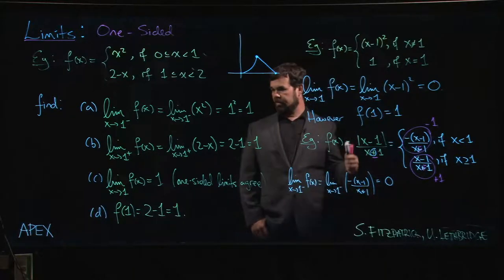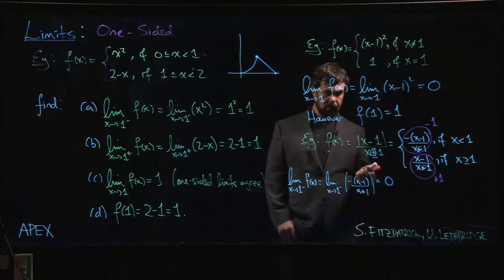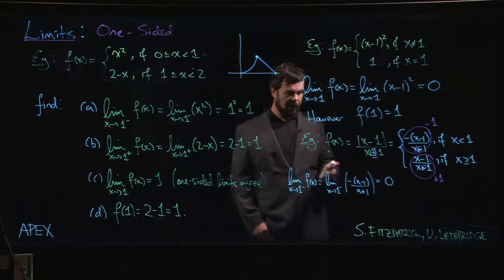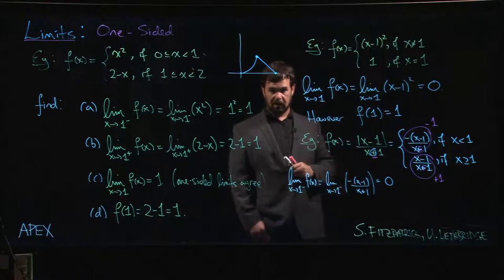So the moral of the story is that if you're handed something with absolute values in it, you sometimes need to be a little bit careful because absolute value functions are piecewise defined functions. And when in doubt, if you're dealing with a piecewise defined function, you should use one-sided limits.